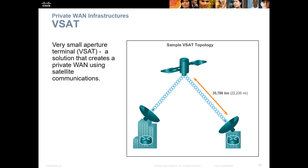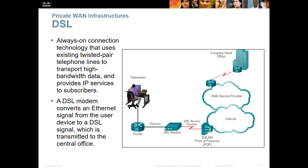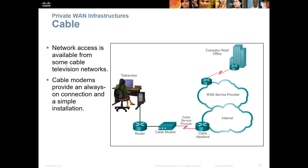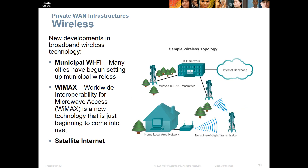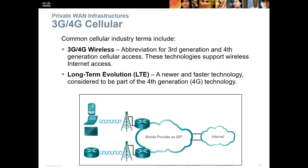VSAT — Very Small Aperture Terminal — is basically satellite internet. DSL uses twisted pair through phone lines. Cable uses traditional coax cable. We also have different types of wireless: Municipal Wi-Fi for outdoor coverage, WiMAX, cellular data, and satellite internet. Cellular data includes LTE and 4G — internet via your cellular phone.